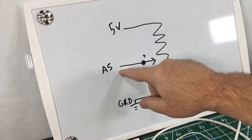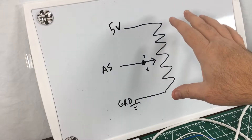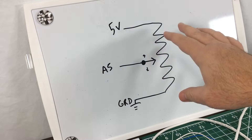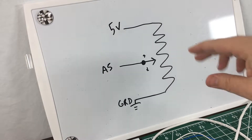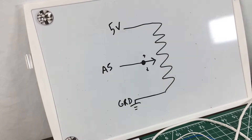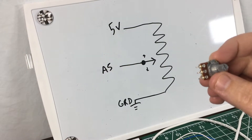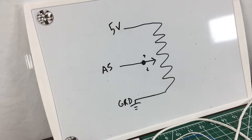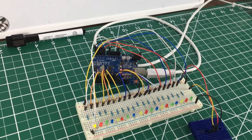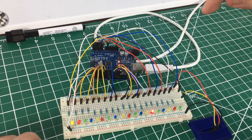The closer the sweeper gets to five volts, the higher the voltage will read on A5; the further away, the lower it reads. It creates a resistor divider network — the math is actually pretty interesting if you want to Google potentiometers. So we'll feed five volts to one pin, ground to the other, the center pin goes to A5 on the Arduino, we read that voltage, and we light up however many LEDs correspond to that voltage.